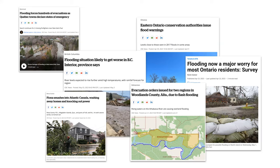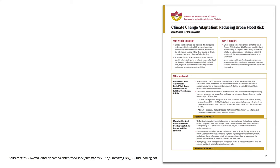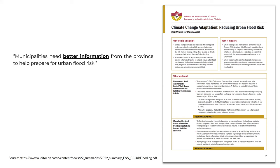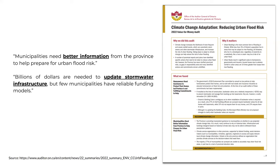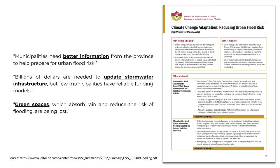The Office of the Auditor General in Ontario released a brief for an audit on climate change adaptation and reducing urban flood risk. They noted that municipalities need better information from the province to help prepare for urban flood risk. Billions of dollars are needed to update stormwater infrastructure, but few municipalities have reliable funding models. Green spaces, which absorb rain and reduce the risk of flooding, are being lost.